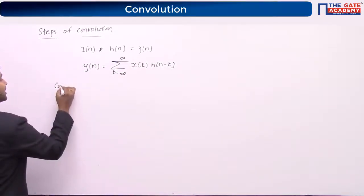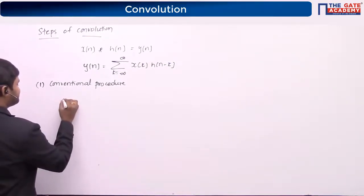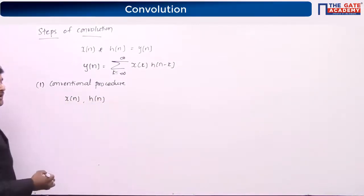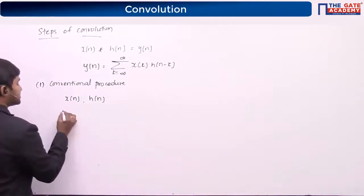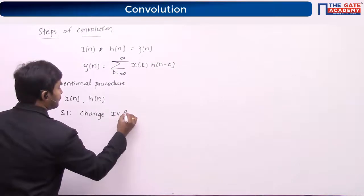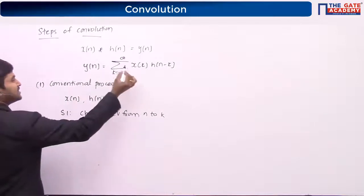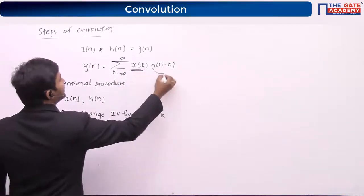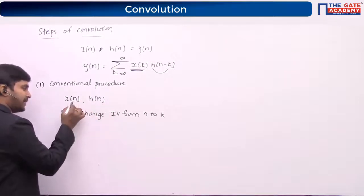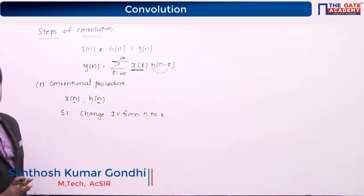So first, we will be knowing the conventional procedure. We will be provided with x of n and h of n to start with. Step one is that we change the independent variable from n to k. Here you are having x of k and in a way h of k. So given the input and the impulse response, where the independent variable is time n, now we are changing the independent variable from n to k.